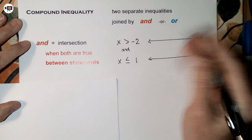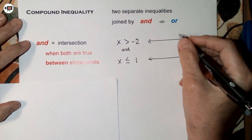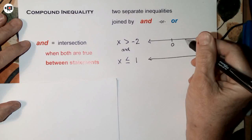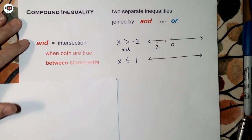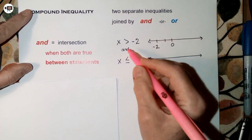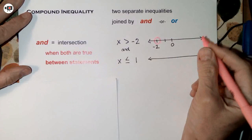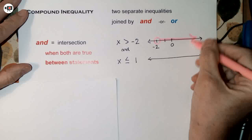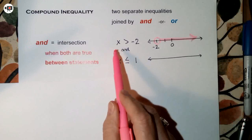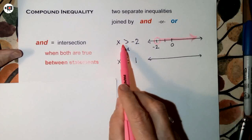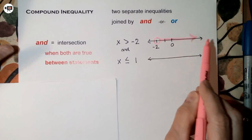I'll put 0 in the middle so the graphs line up, and mark negative 1 and negative 2. For x is greater than negative 2, we place an open circle at negative 2 — if it were greater than or equal to, it would be closed. The arrow going right shows all values greater than negative 2. A handy trick: when the variable is on the left, the greater-than symbol's arrow matches the direction you shade on the number line.